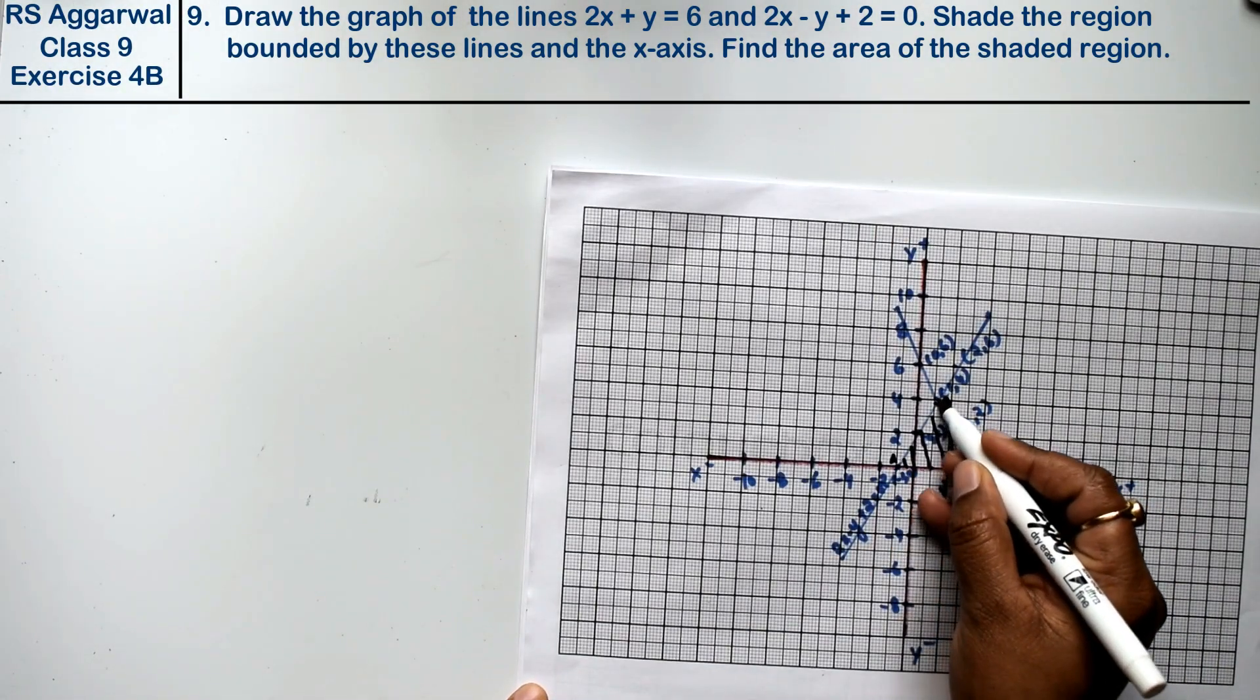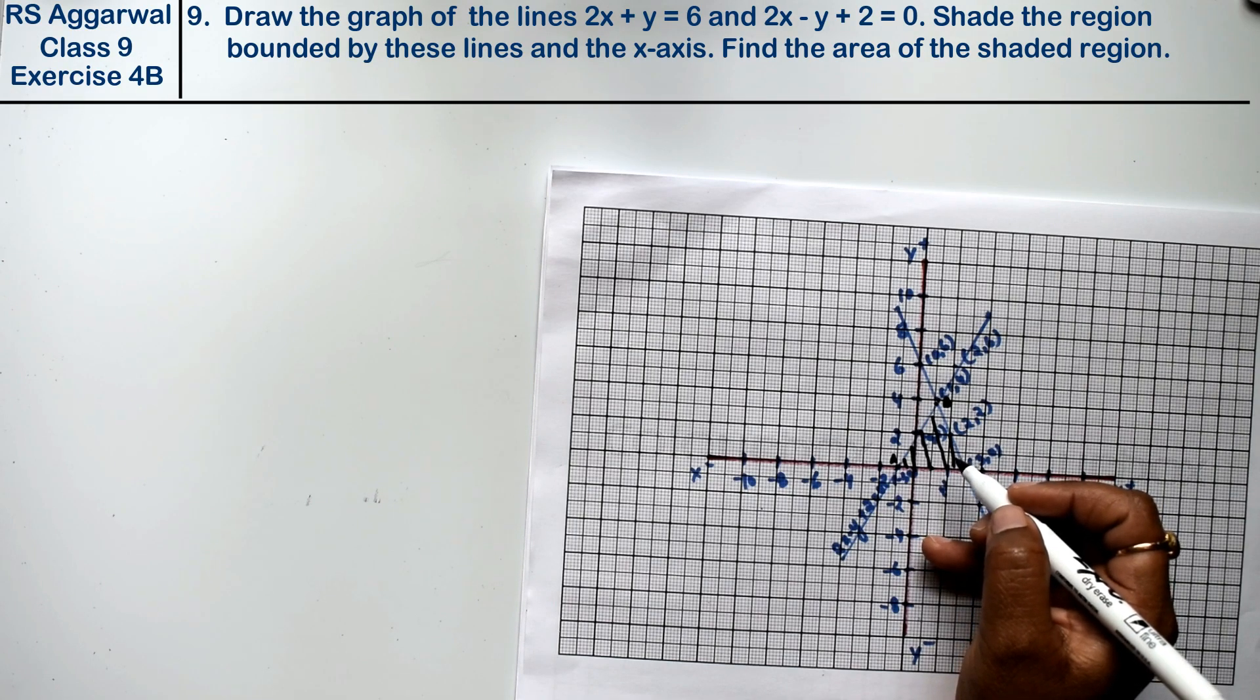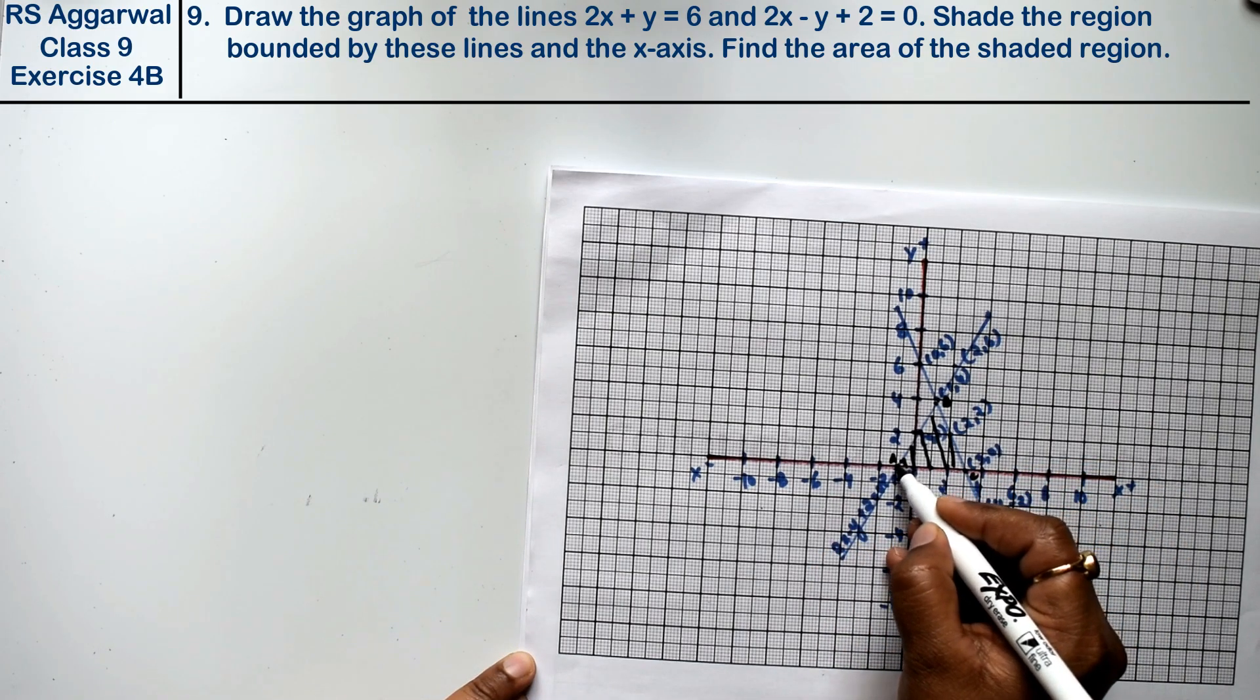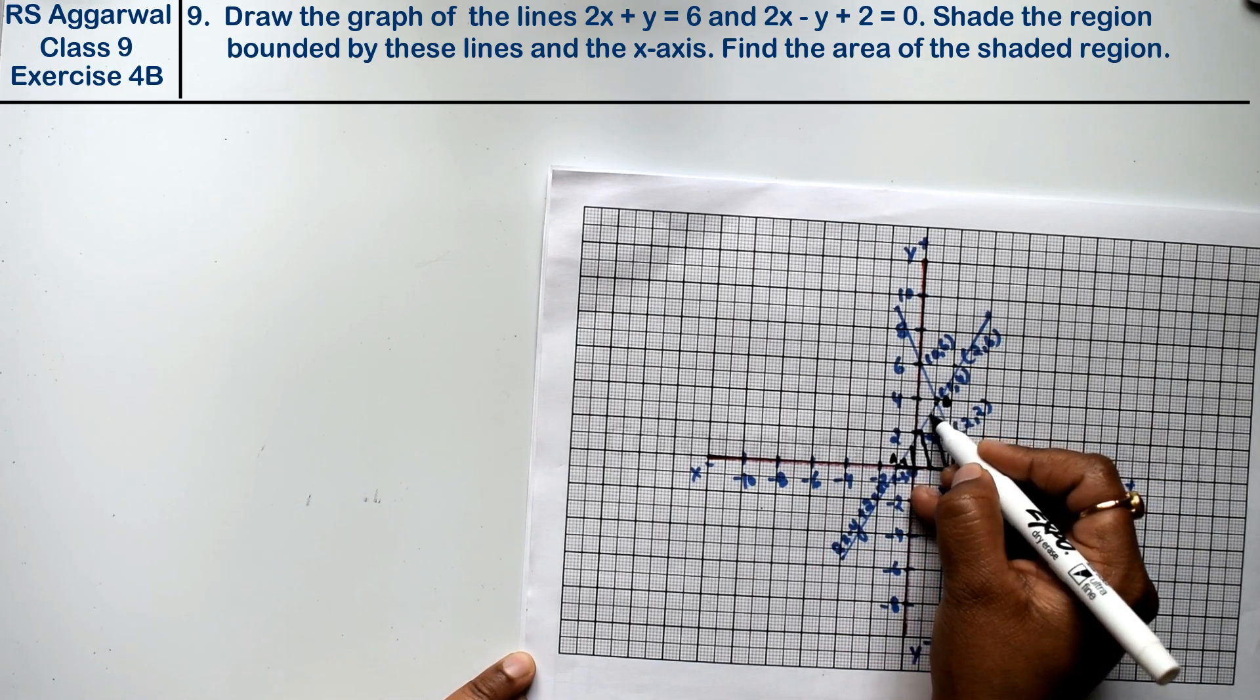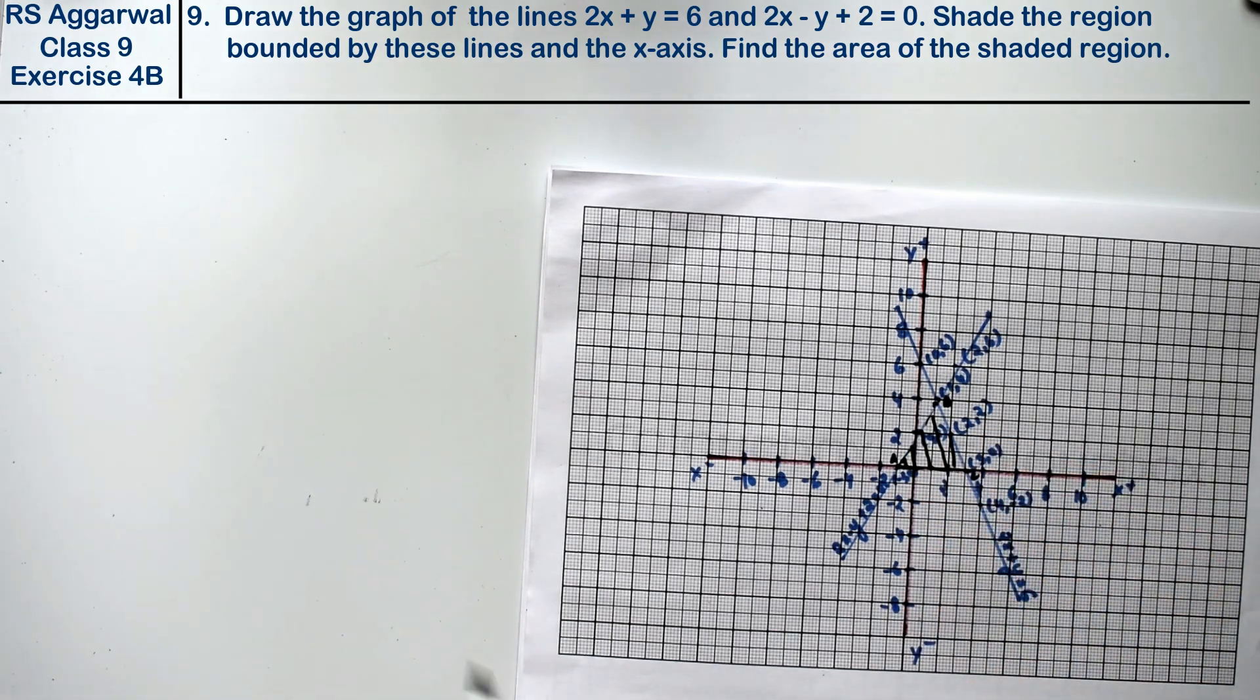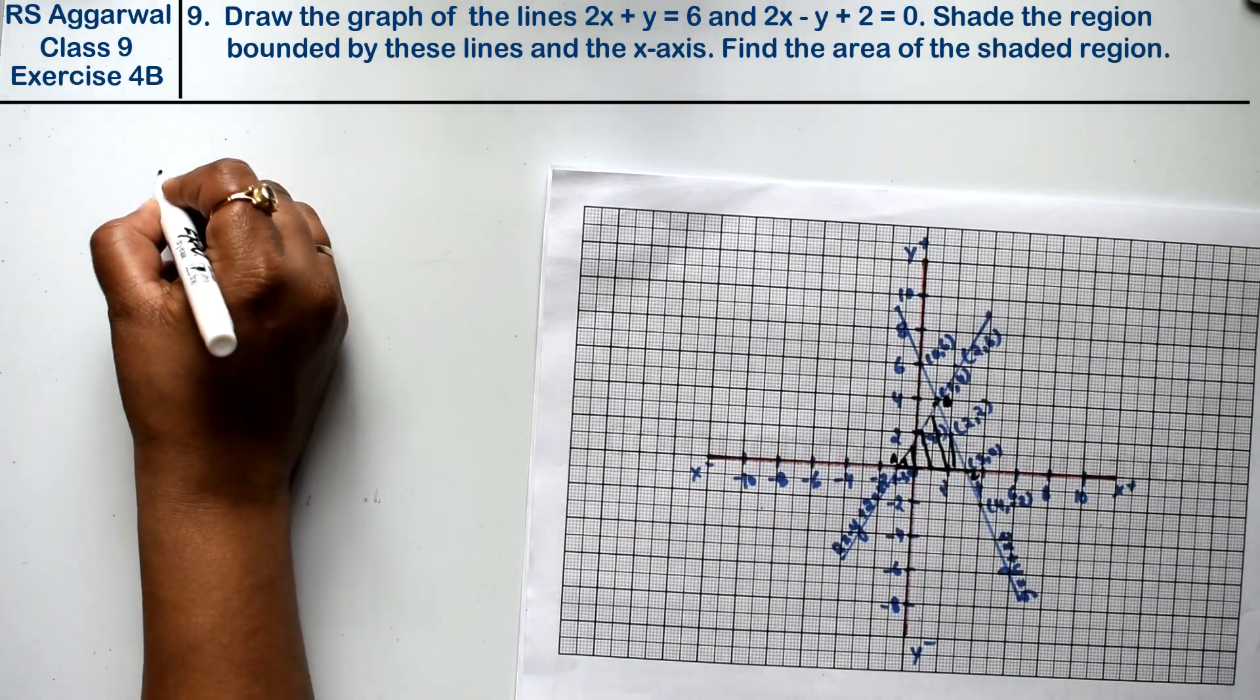Because it is saying shade the region bounded by these lines and the x-axis. This is our x-axis. So this is x-axis, these lines, and the x-axis forming a triangle. What is this triangle?